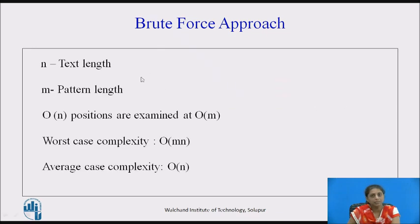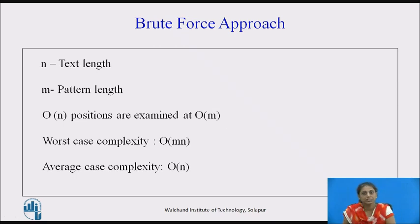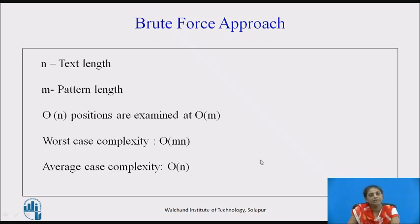Assuming text length is n characters and pattern length is m characters, O(n) positions are examined at O(m) comparisons each. The worst case complexity of the brute force approach is O(mn), whereas the average case complexity is O(n), meaning the pattern can be found randomly at any position.